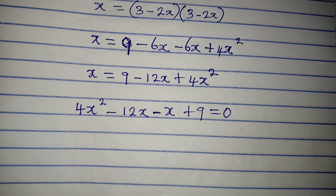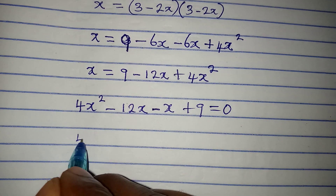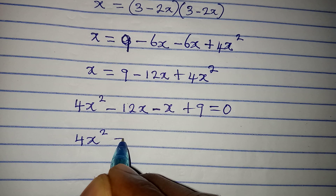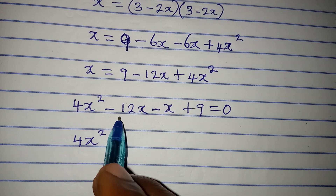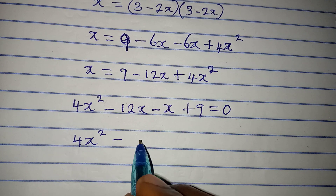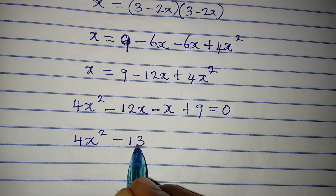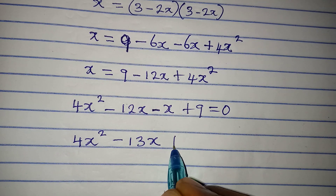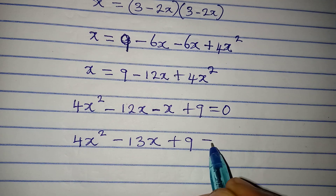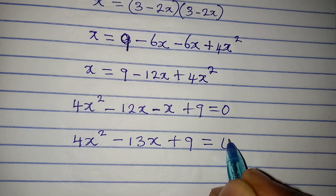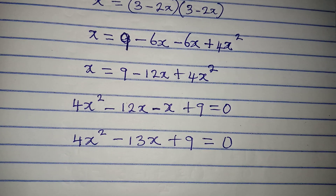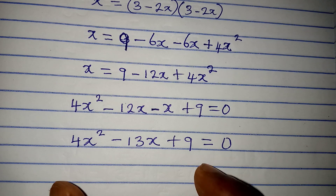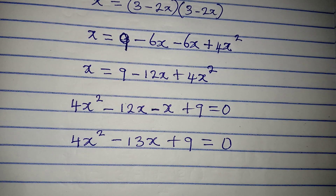So we have 4x squared minus 13x plus 9 equals zero. Now what method do we use to solve this quadratic equation?